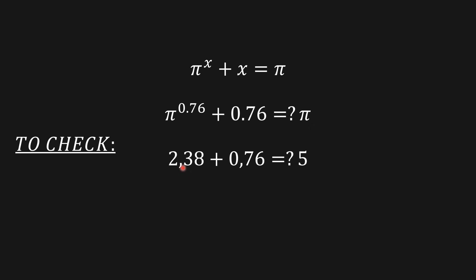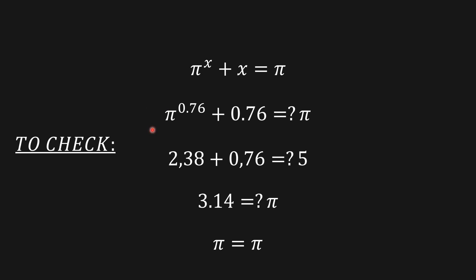Using x ≈ 0.76, π to the 0.76 is approximately 2.38, and 2.38 plus 0.76 gives approximately 3.14, which equals π. So we can confirm that π equals π, and our solution checks out.